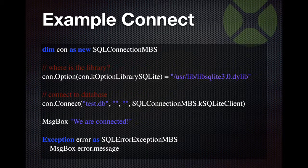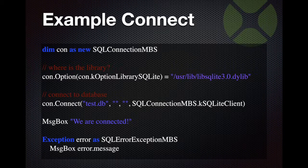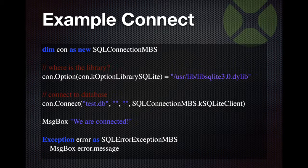Here is an example for connecting to SQLite with the SQL Connection MBS class. We set an option here to specify where to find the database library. Then we connect and pass the path to the database file as the connection string. No username or password as SQLite doesn't use that. We specify the client type as SQLite so the plugin knows what to do. In case of a connection error, we catch an exception.